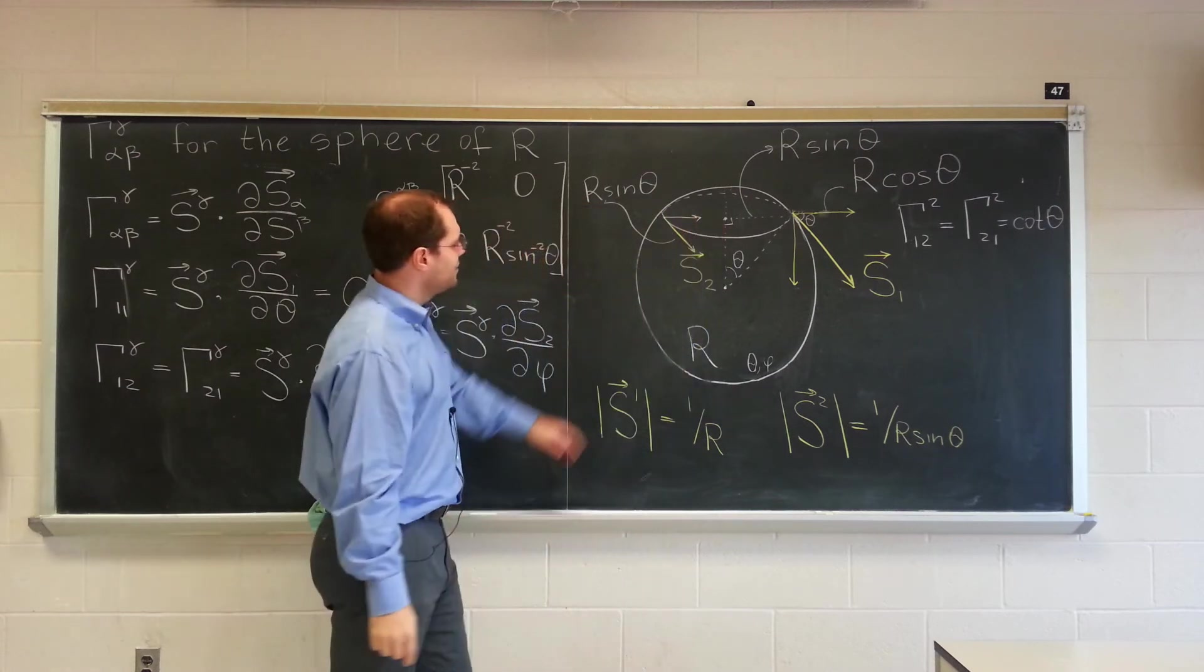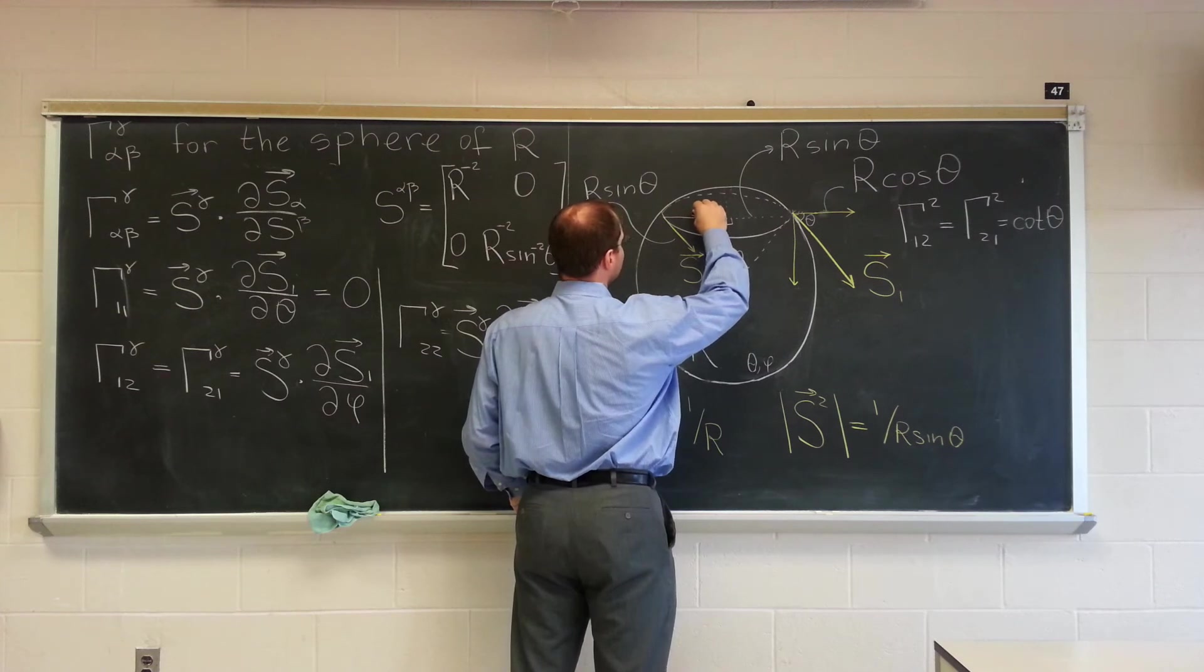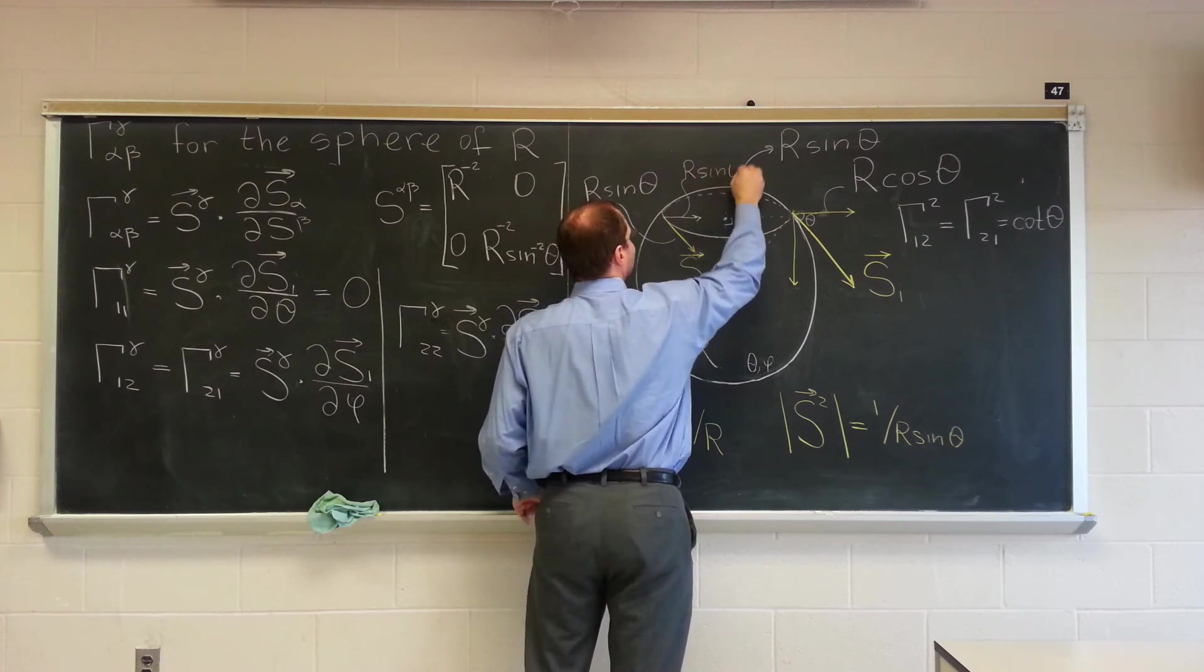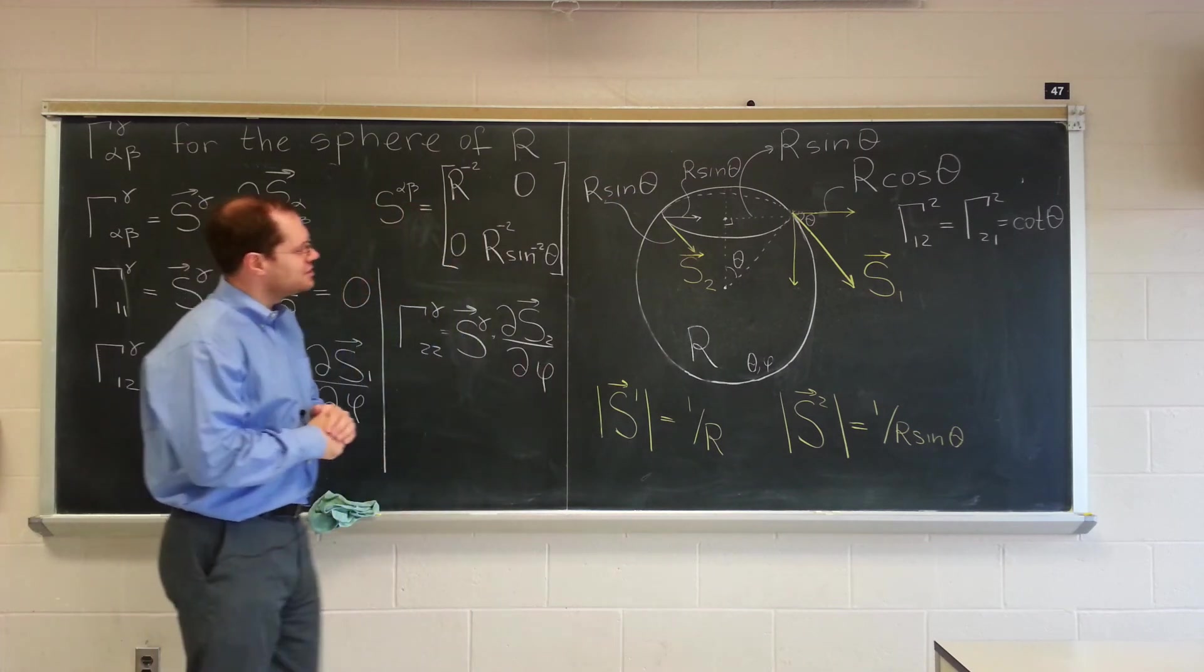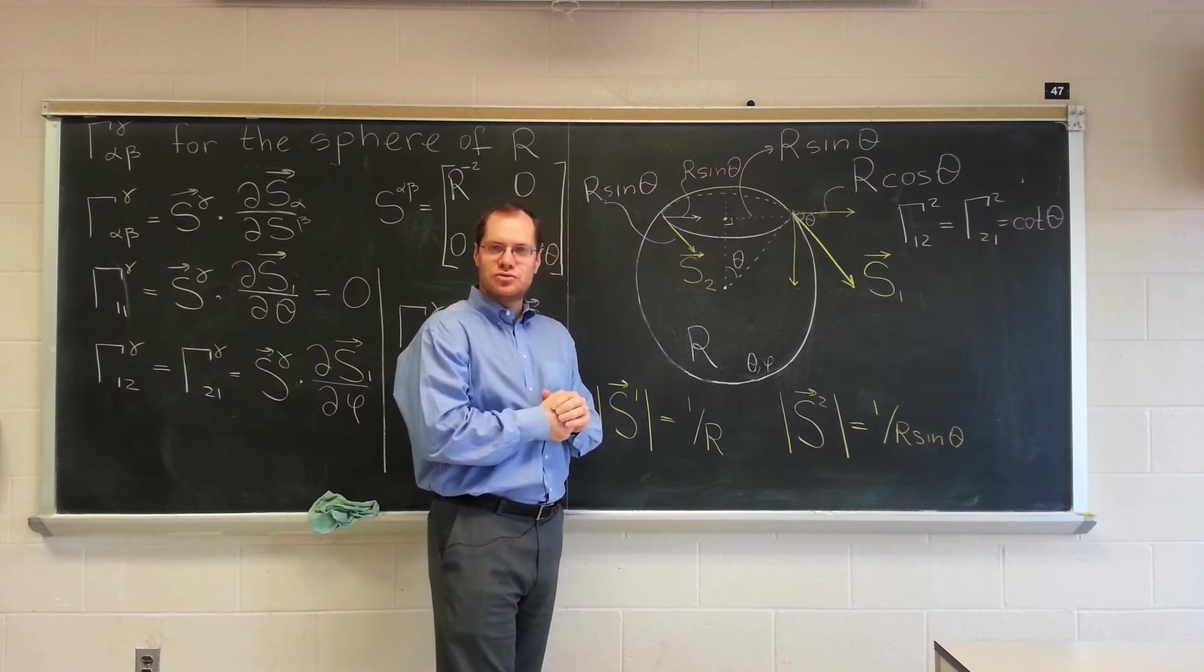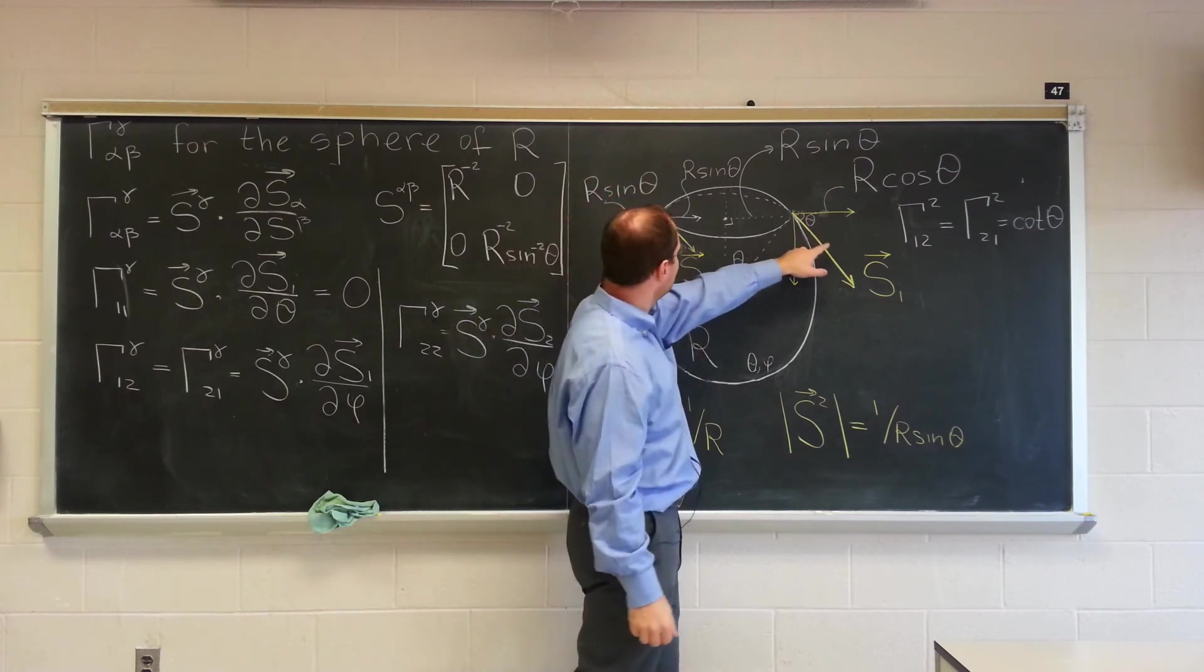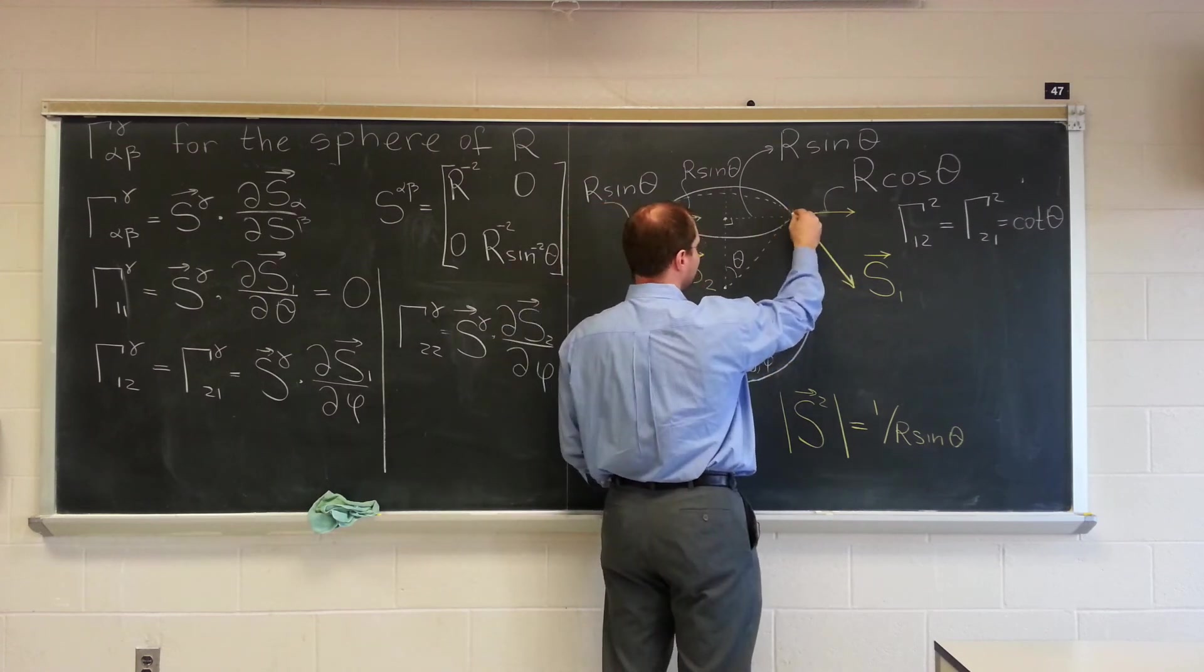It makes a full revolution in two pi units, so the derivative will also have the length R sine theta, and it'll point in the plane of this circle in the direction orthogonal to the circle. It'll be length R sine theta, and now we will really have to use our power of visualization. It's orthogonal to S2, which tells us that gamma 2, 2, 2 is zero. So let's draw it here so they're on the same footing.